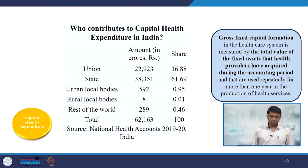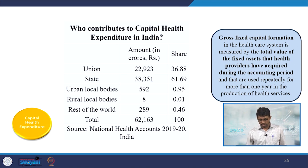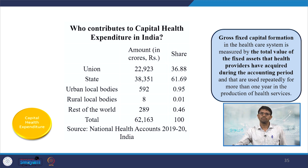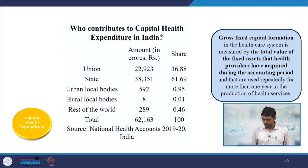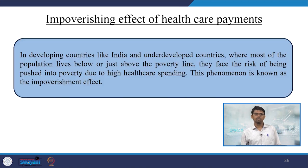Regarding capital health expenditure: state government carries the highest share, followed by the union government — consistent with health being a concurrent subject. Gross fixed capital formation in the health system is measured by the total value of fixed assets that health providers have acquired during the accounting period and that are used repeatedly for more than one year in the production of health services. This can also be used as an indicator in research paper analysis.